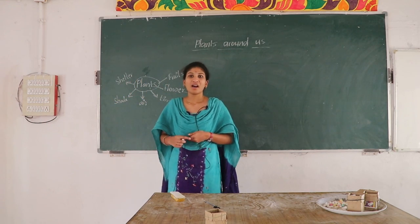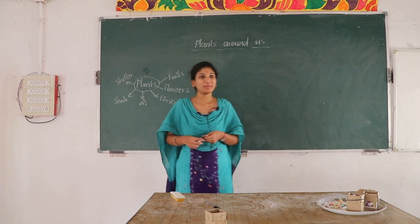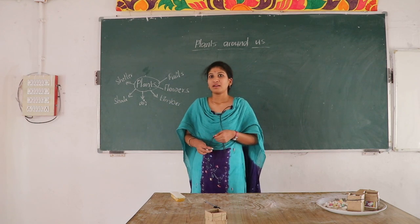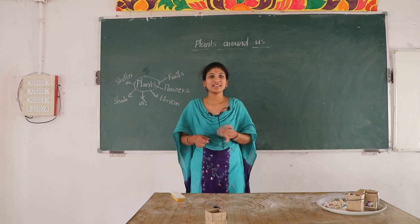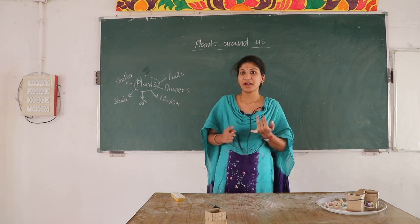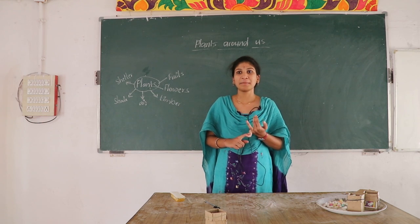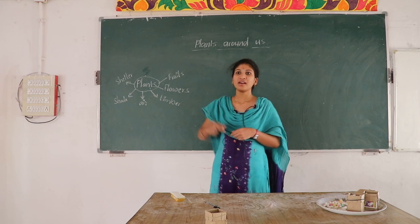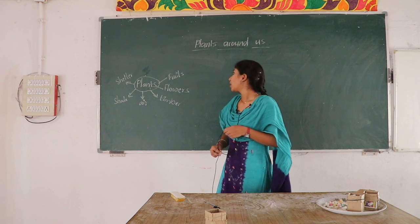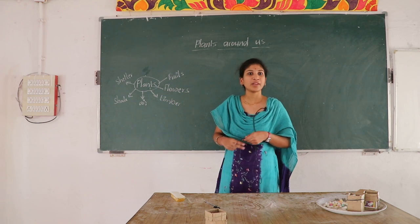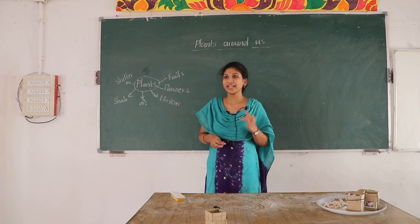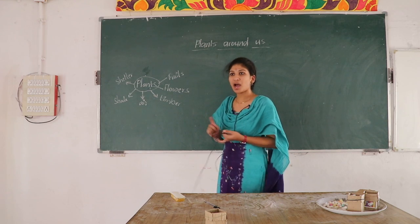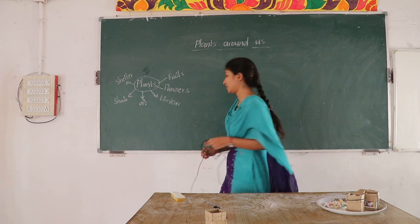Are all plants similar? No. Some plants are small, some are big, some are very big. The plants are divided into three types. What are they? Small, big, very big.